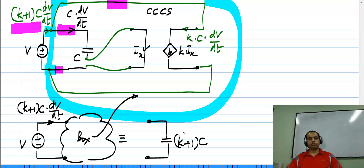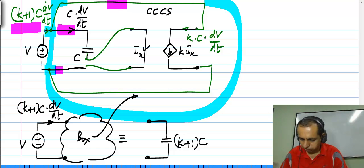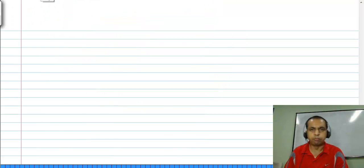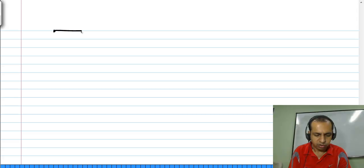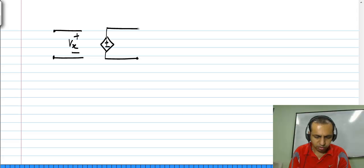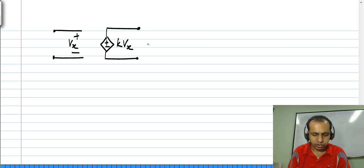This kind of scaling of an element can also be achieved using a voltage-controlled voltage source. One example of that, which is quite popularly seen in circuits, I will show here without discussing it too much. Let us say we have a voltage-controlled voltage source with a scaling factor k.